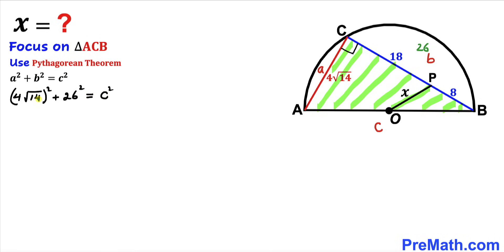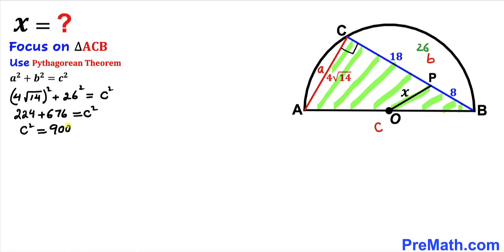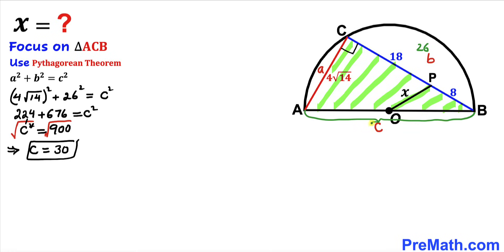Taking care of the square: (4√14)² gives us 16 times 14, which equals 224. So we have 224 + 676 = c², meaning c² = 900. Taking the square root on both sides, c equals positive 30.